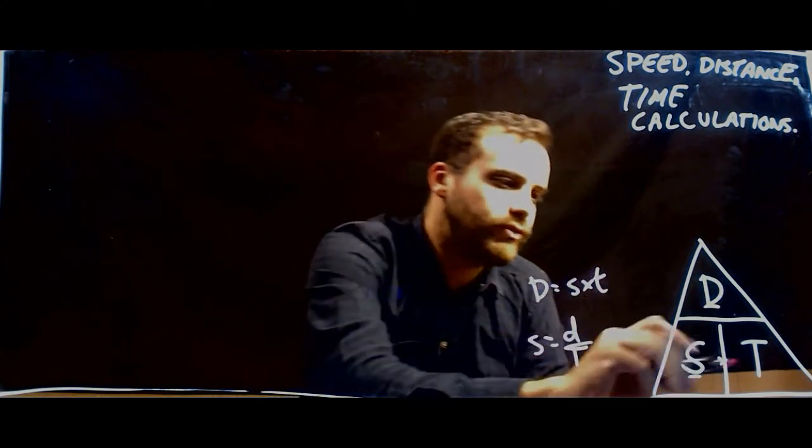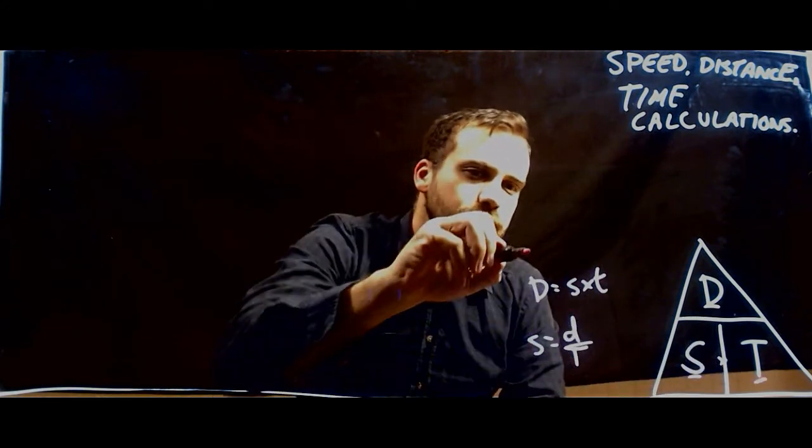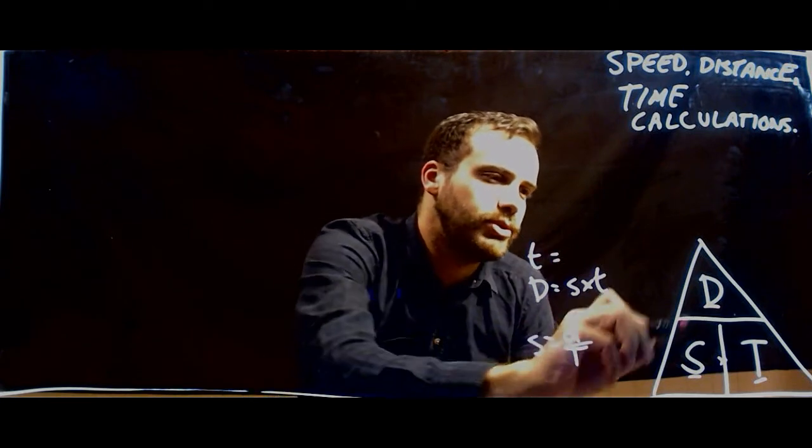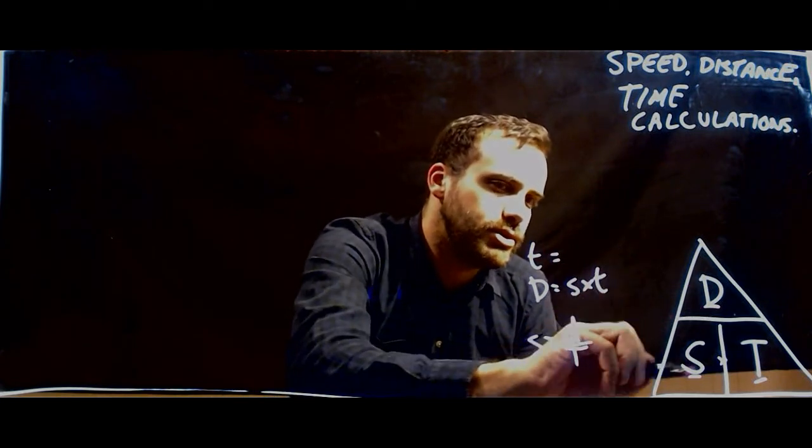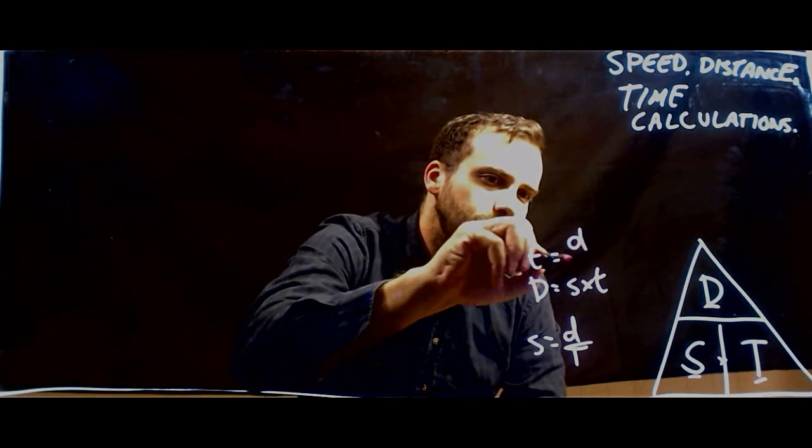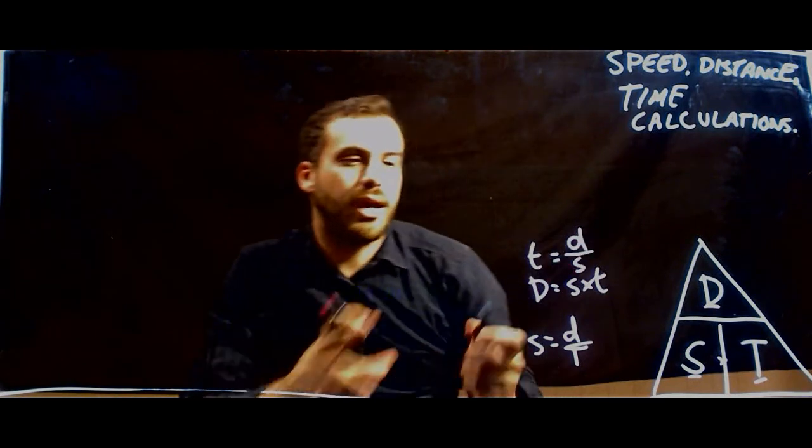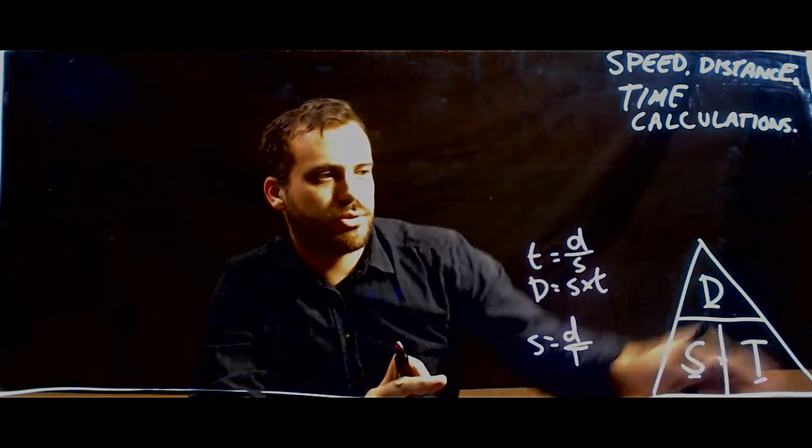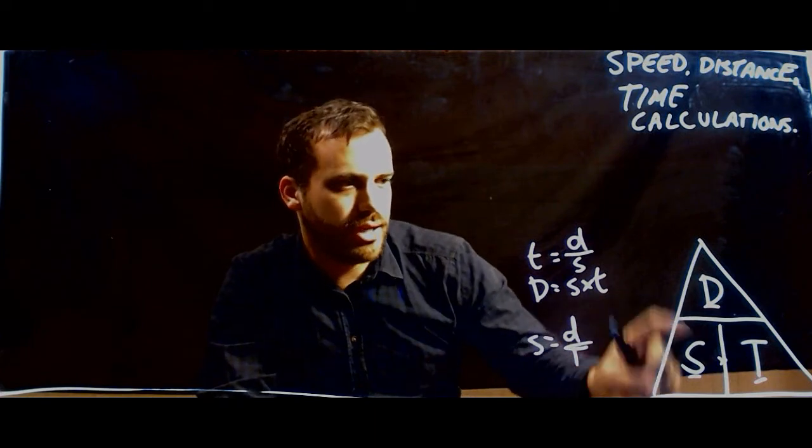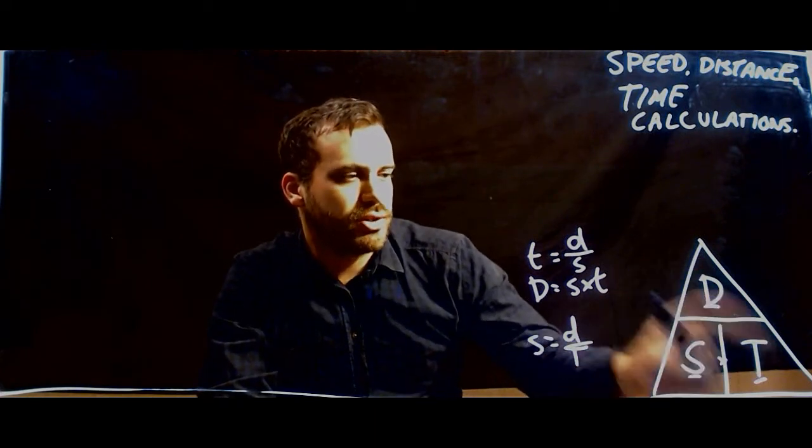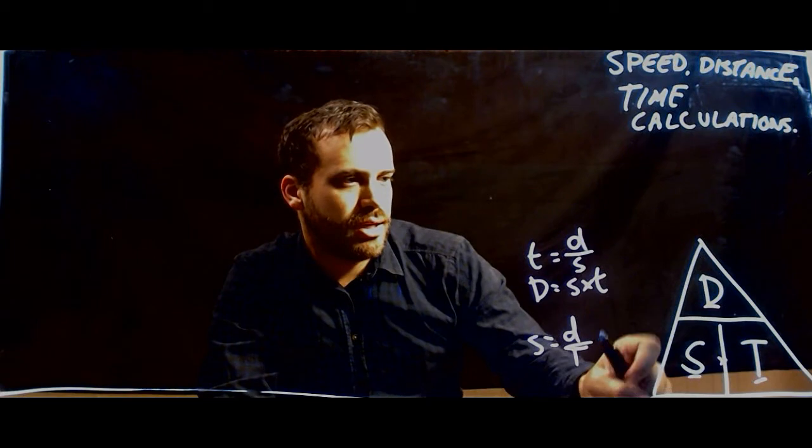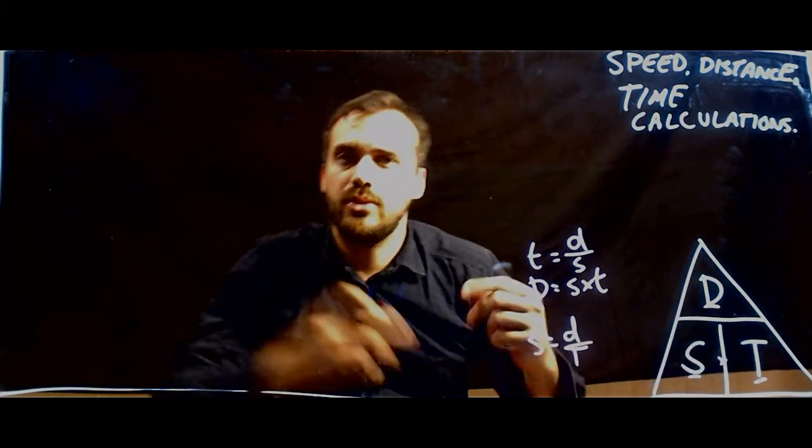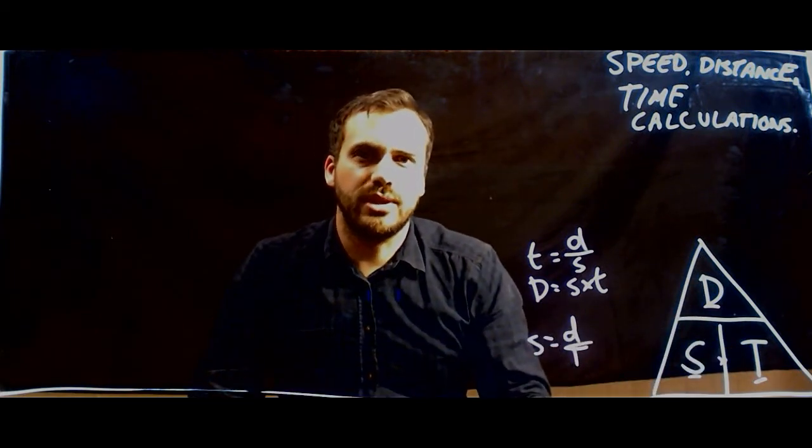And finally, if you want to find out what time is, you can say that time equals distance over speed. And that's really all there is to it. As long as we remember the triangle and we know how to do it, speed equals distance over time, time equals distance over speed, and distance equals speed times time, we can do all the maths that we really want to do here.